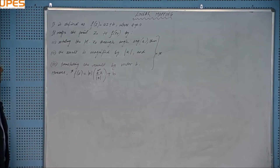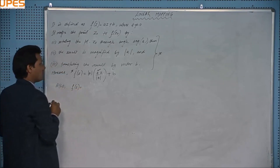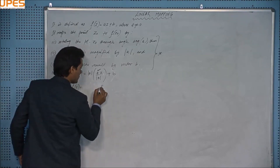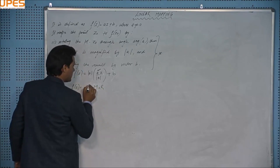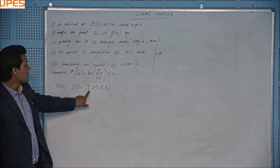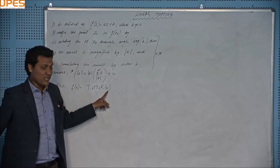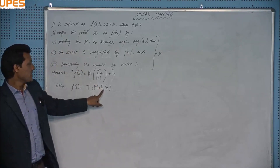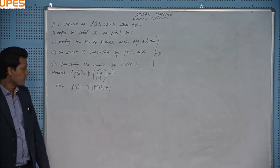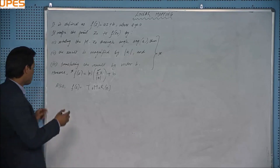We can write the composition formally as f(z) = T∘M∘R, where R stands for rotation, M for magnification, and T for translation. When you input z₀, the first operation that comes into play is rotation, then magnification, then translation. This order must be maintained: it is T∘M∘R, not any other arrangement.